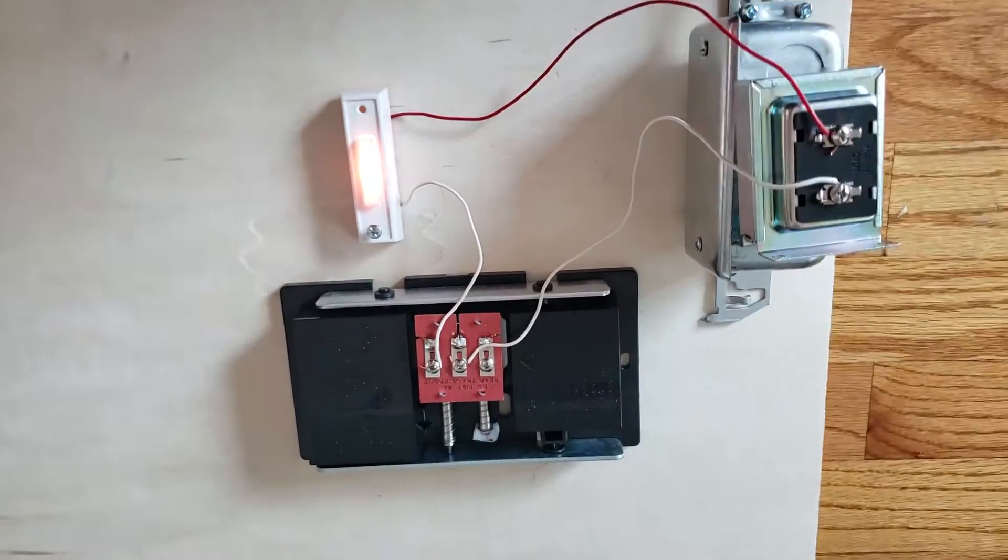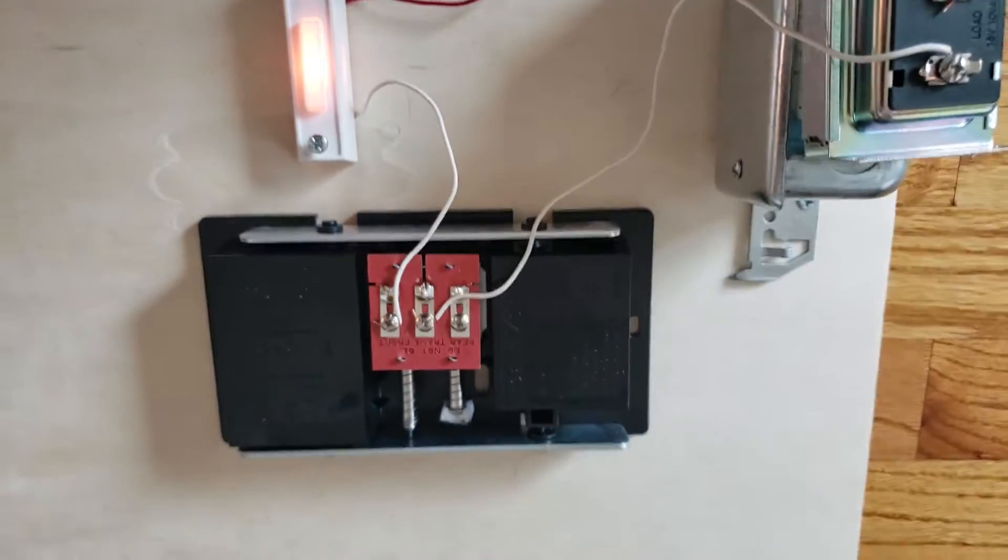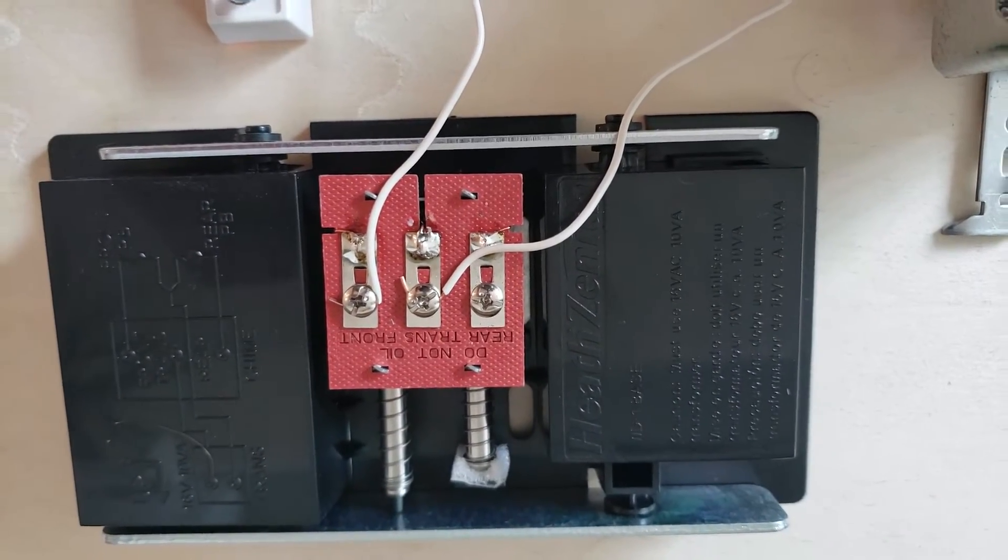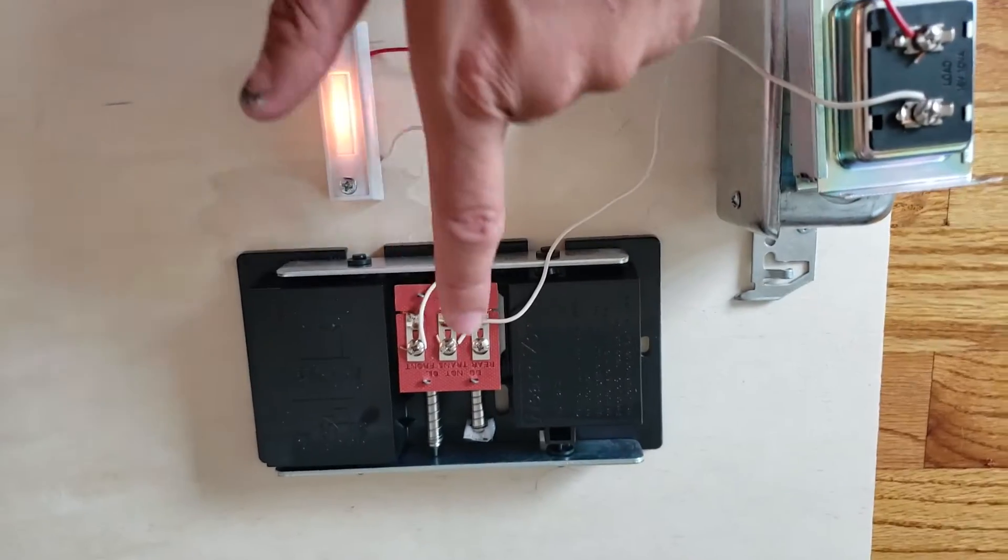Okay, and I'm going to zoom in here. It's very simple because the terminal you put it on is labeled 'trans' for transformer. So you take one wire, you go from the transformer to the transformer terminal on the doorbell chime.